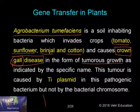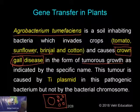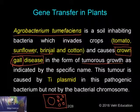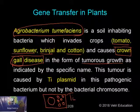The Agrobacterium tumefaciens bacterium has its own chromosome, and it also has many plasmids. This plasmid is called the Ti plasmid, and it carries the genes for causing the disease. The genes in the Agrobacterium chromosome are not responsible for the crown gall disease; it is the genes in the Ti plasmid of Agrobacterium tumefaciens that are responsible. These plasmids are called Ti plasmids.